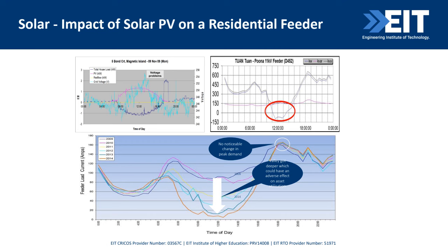There is an impact, and if you look carefully, in maximum time — which is the peak time — there is a dip in supply. This is a great picture where you can look at what the trends are at a power station when the duck curve comes. You will see that there is no noticeable change in the peak demand, but there is a huge valley which could have an adverse effect on asset distribution and utilization.